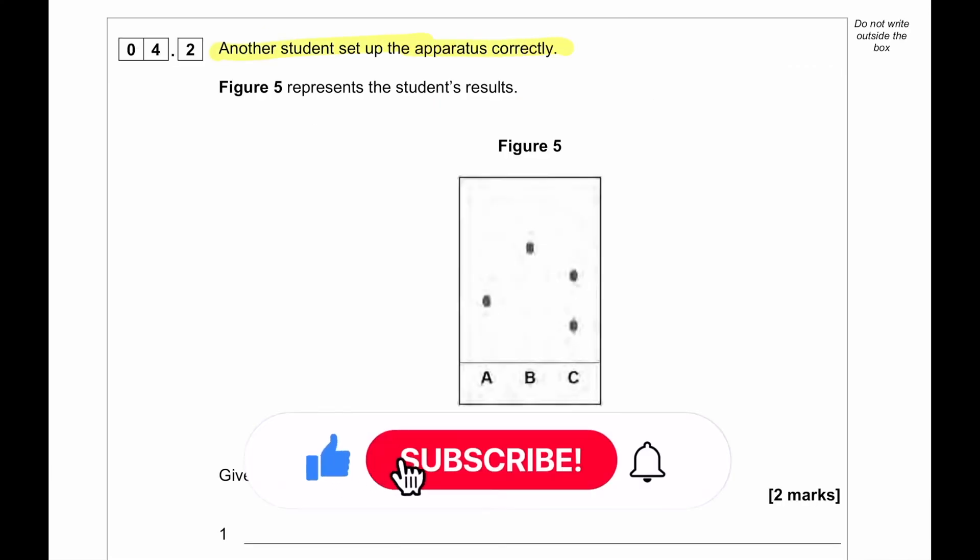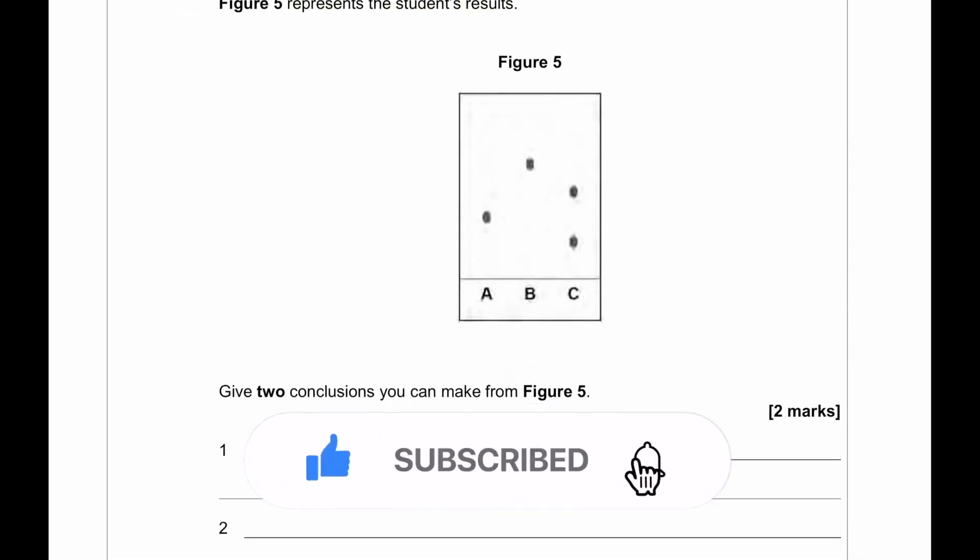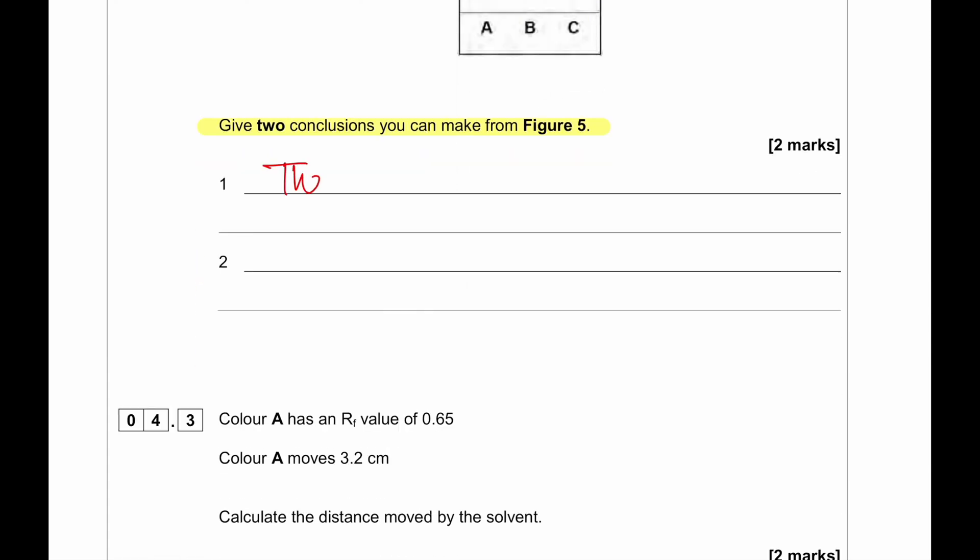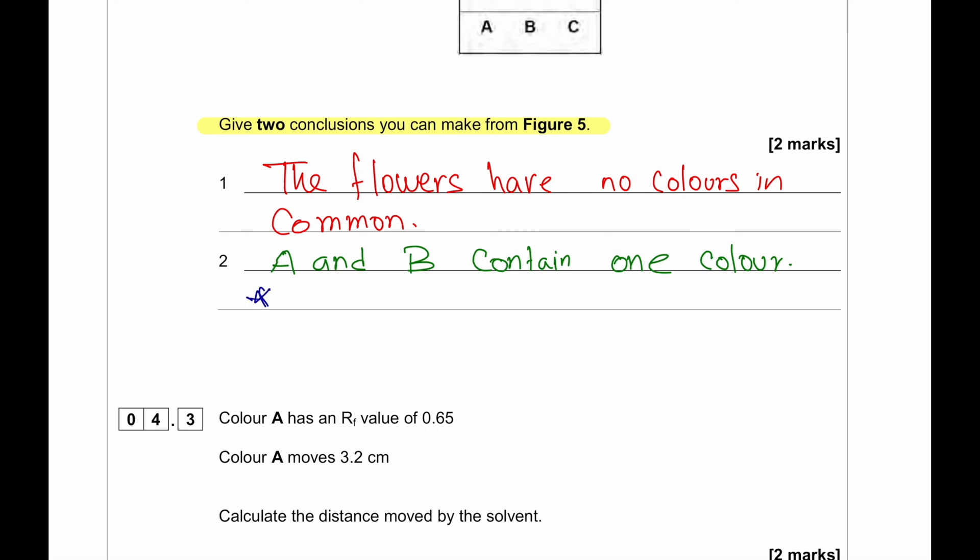Now, the student set up the apparatus correctly. You can see how the experiment is set up. We can see C is a mixture of two colors. B is a pure color. A is a pure color. Neither A or B can be found in C. Give two conclusions that you can make about figure 5. So, the conclusions that we can write: The flowers have no color in common. A and B contain only one color. C contains two colors. And the color B is the most soluble because it travels the highest.